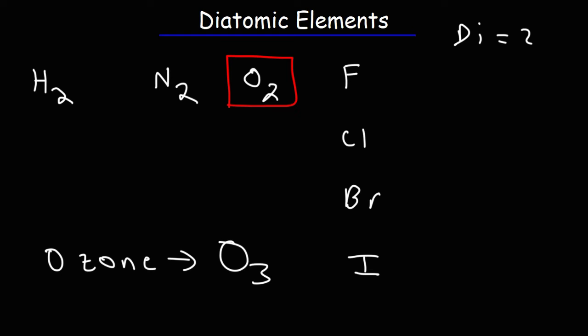But the most common form of oxygen that we see or that we breathe on Earth is O2. It's the diatomic form of oxygen. That's the most stable form. But keep in mind, there are other forms of these elements.